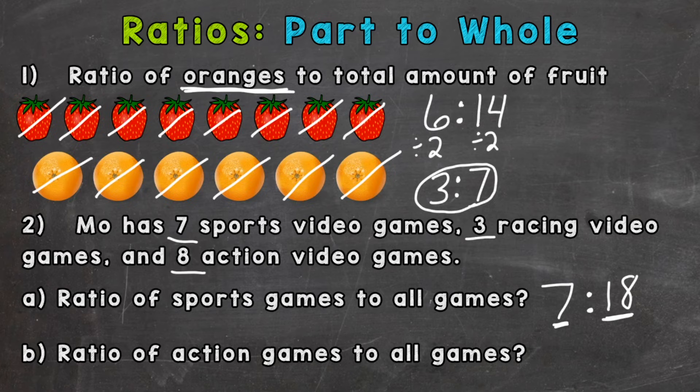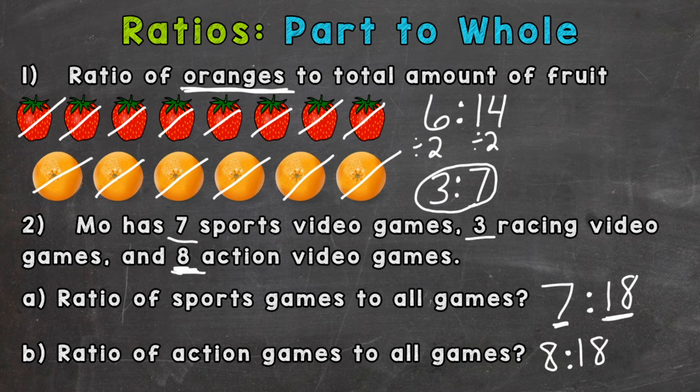Let's take a look at part b: ratio of action games to all games. So action games we have 8, right? 8 to the total amount of games, the whole, which is 18. Now this ratio can be simplified.